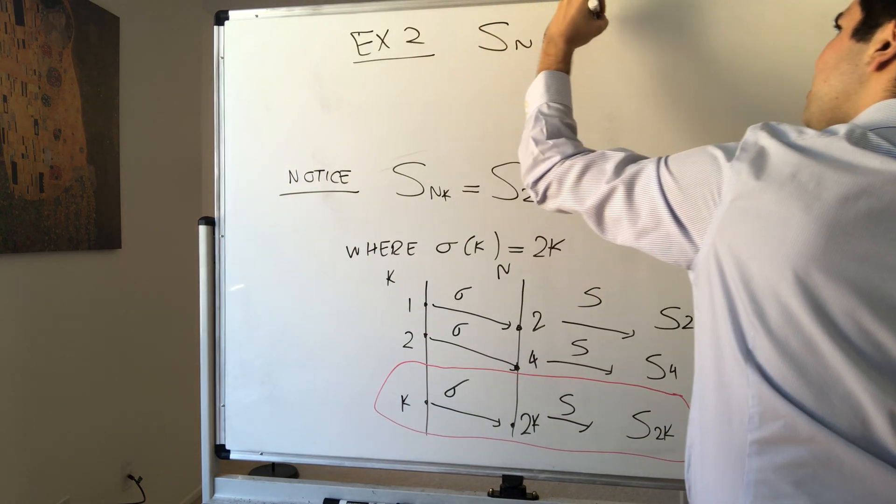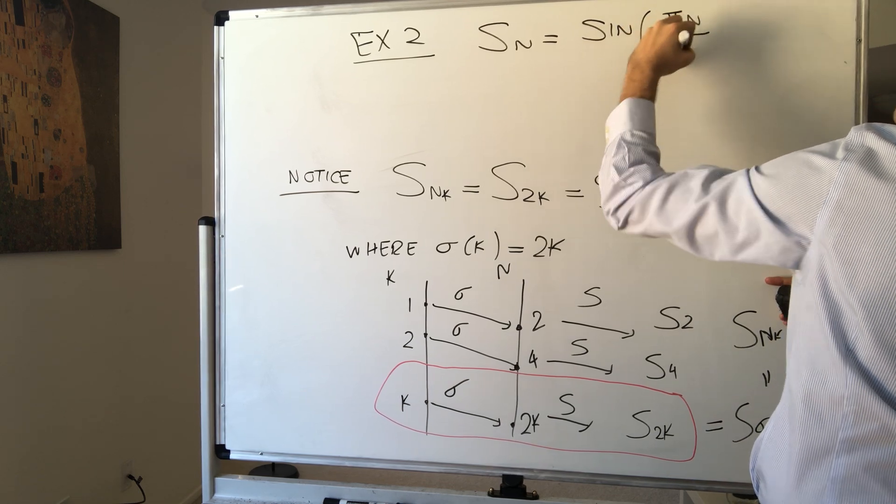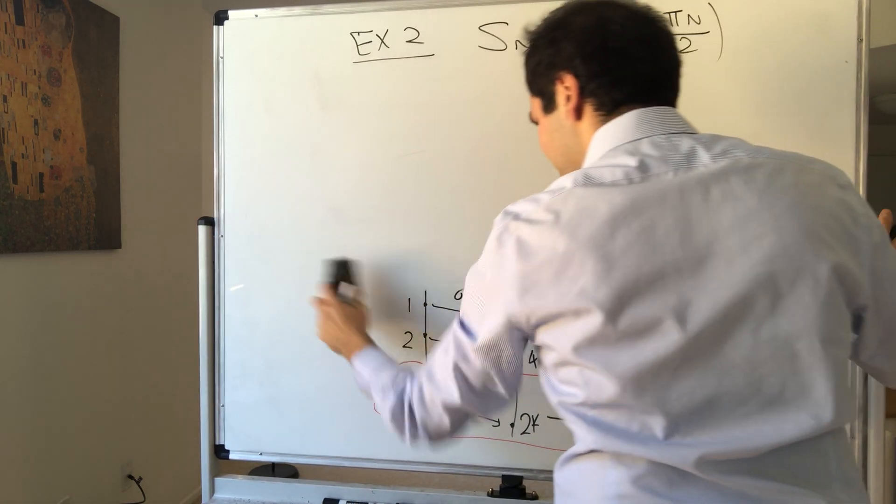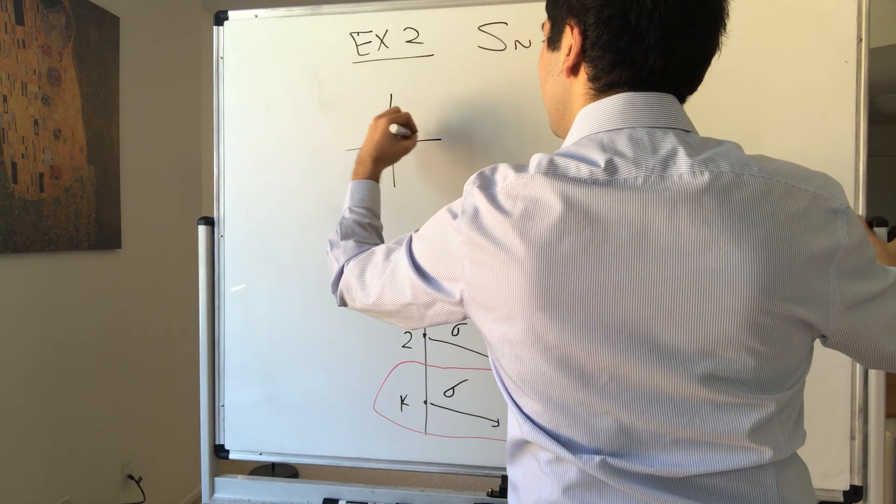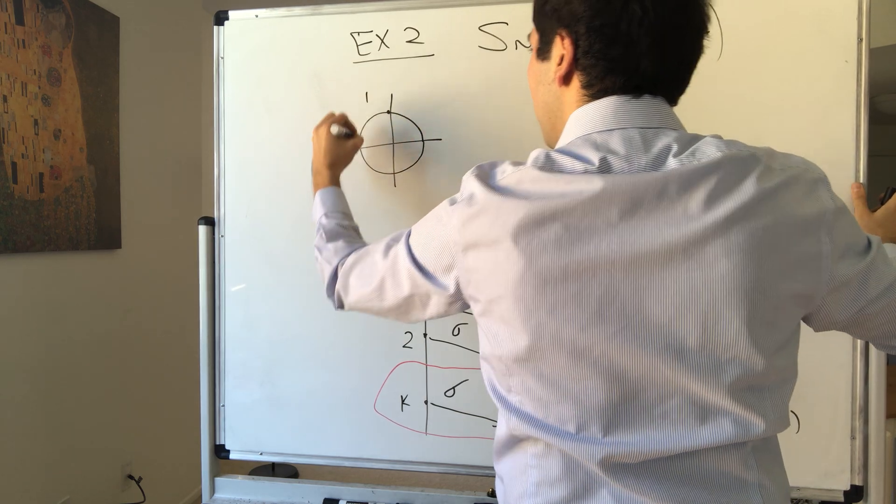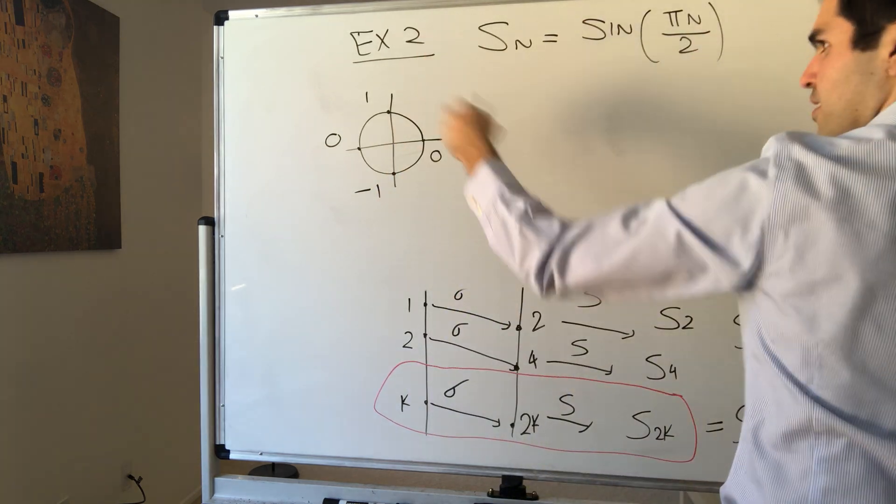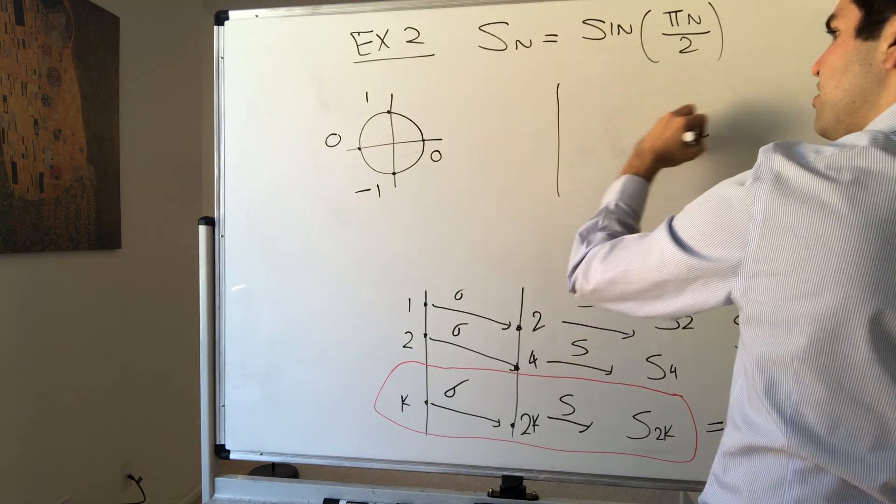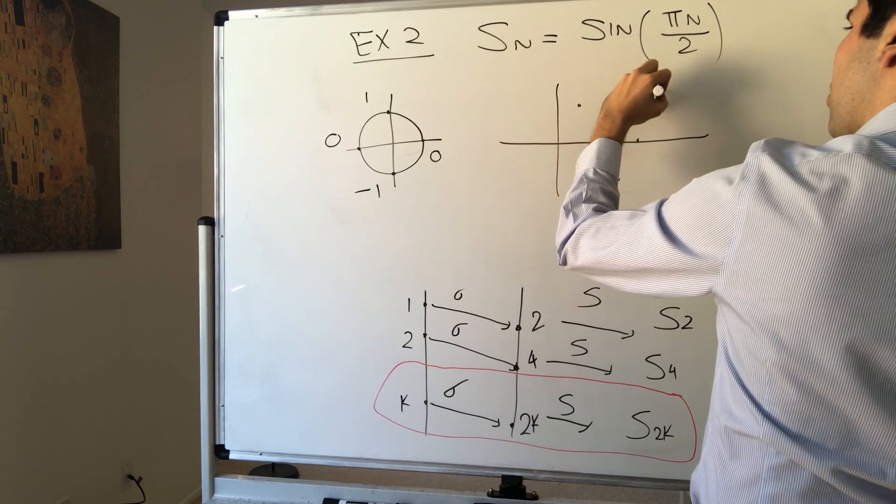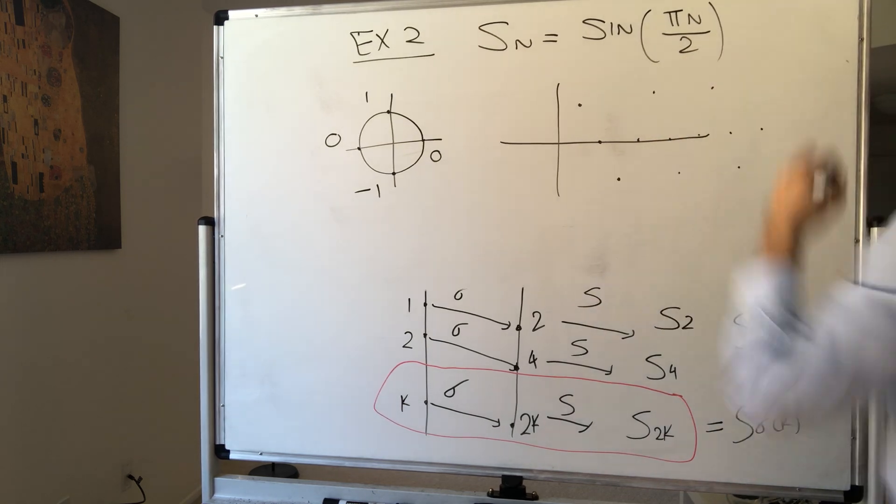So let sn be sine of pi n over 2. And then, what does that look like? So you have the unit circle, and you start at the pi over 2. So you start at 1, and then 0, and then minus 1, and then 0. And it cycles back and forth. So the sequence itself looks like that. 1, 0, minus 1, 0, 1, 0, minus 1, 0, 1, 0, minus 1, 0. Beautiful and periodic.